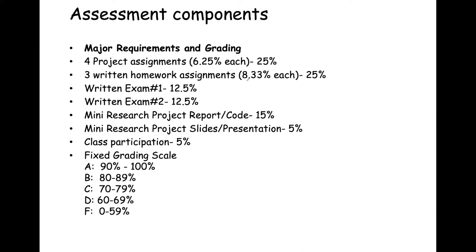These are the assessment pieces. We'll have four project assignments worth 6.25% each, for a total of 25%. Three written homework assignments worth 8.33% each, for a total of 25% of the grade. Two written exams worth 12.5 points each, for a total of 25% of the grade. Then there's a research project: the report and code is 15%, the slides and presentation is 5%, and class participation is 5%. Everything is on a fixed grading scale.